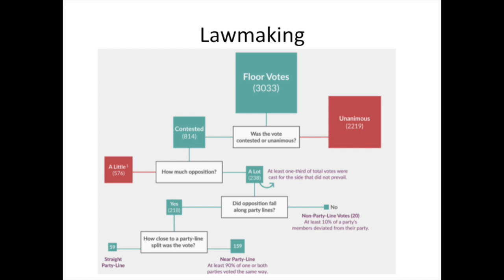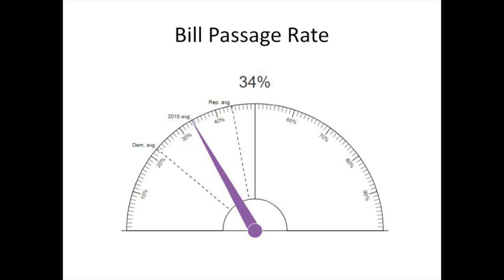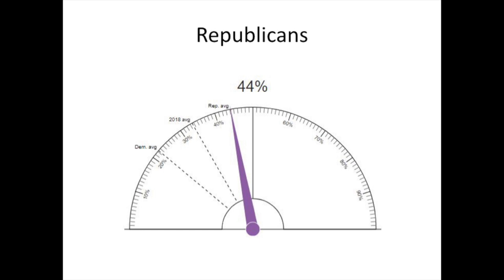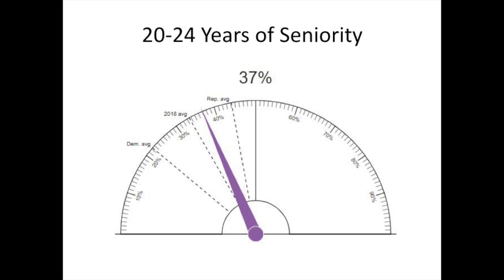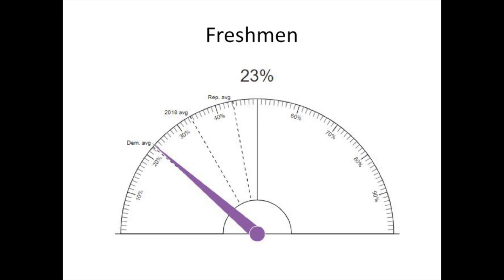We also did bill passage rate. In the 2018 session, 34% of the bills were passed. If you filter by party — if you're the Republican party, you have a higher percentage, which naturally follows because Republicans are in fact in power in both houses, whereas Democrats have a harder time passing things. If you look at seniority, it certainly helps to know the system and have relationships — if you're new, it's much tougher. And likewise, if you're a woman, it's still a tougher slog than for men.